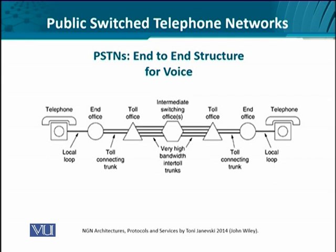Let's look at the PSTNs from an end-to-end structure, specifically from the telephony point of view. Starting from the left-hand side, we notice that from the telephone we have a local loop, which is the analog transmission line. It could be copper cable, either in the form of twisted pair or coaxial cable, but mostly it is the twisted pair which is used. That is connected to the end office, which can in turn connect to the toll office — the local exchange.